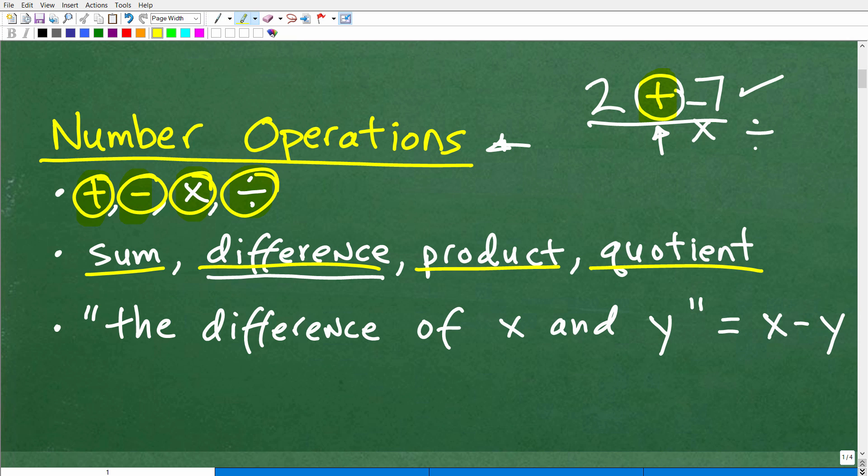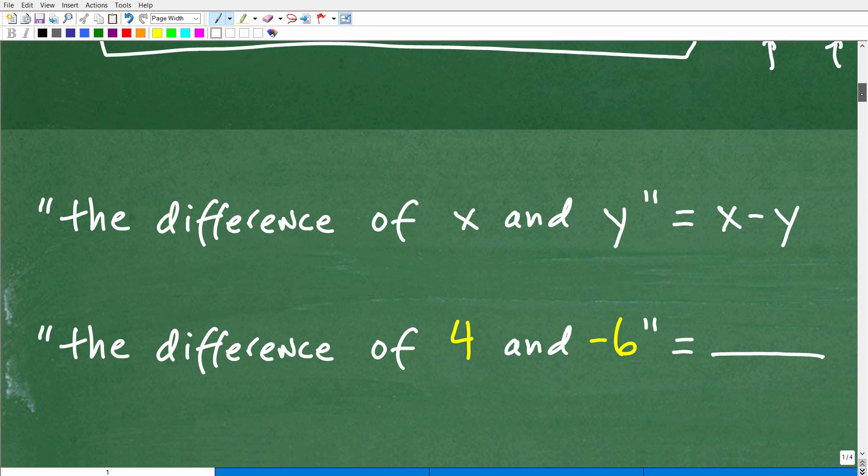And there's very specific definitions that go along with these. And it's important that you have a really strong grasp of what they mean. And of course, we're going to be focusing in on the difference. So let's take a look at the definition of the difference. And that is the difference of x and y, some number x and another number y is x minus y. Okay. So that is the definition. So when you see something written verbally, the difference of some number and another number, but that means x minus y.